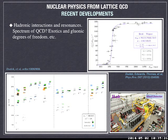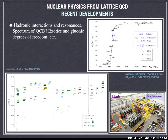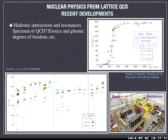For example, the rho resonance — which is the resonance in the pi-pi isospin equals 1, spin equals 1 channel — is a very nice result requiring a lot of effort. We're basically ready to do this kind of study at a physical point too. Other developments concern the spectrum of QCD — we still don't have a lot of information about the spectrum, especially when it comes to exotic and gluonic degrees of freedom. For example, there is this upcoming experimental effort at JLAB, the GlueX experiment, that is going to study extensively this type of mesonic and baryonic degrees of freedom of QCD.